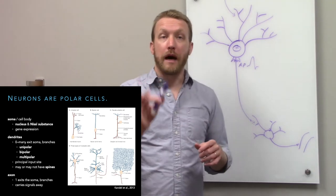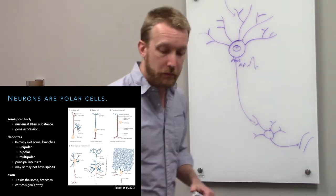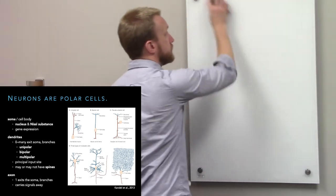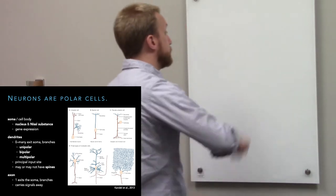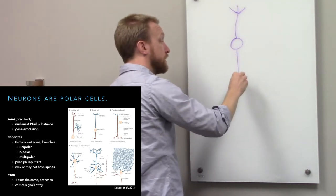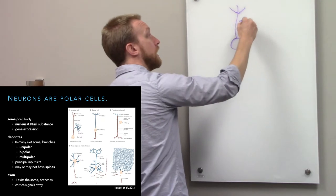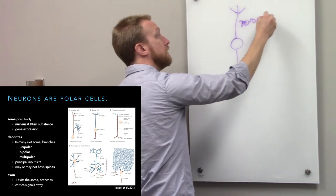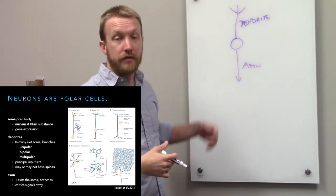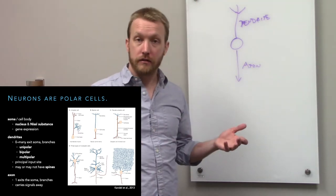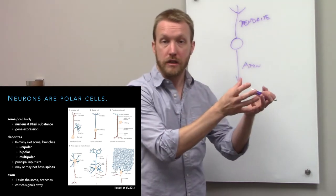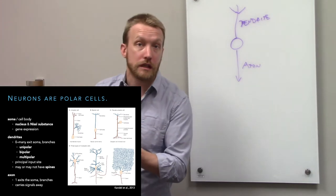Bipolar neurons only have one dendrite, so they truly just have two sides: the receptive end (the dendrite) and the transmissive end (the axon). These are for very simple relays. We find bipolar cells in the retina, for example, to simply move information from the photoreceptors to the retinal ganglion cells.